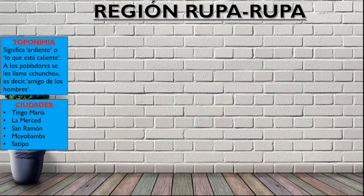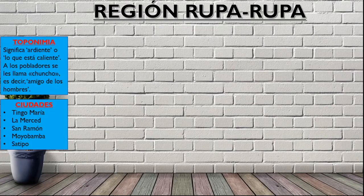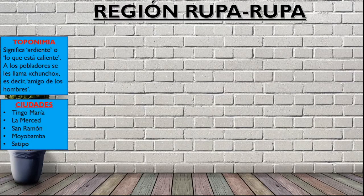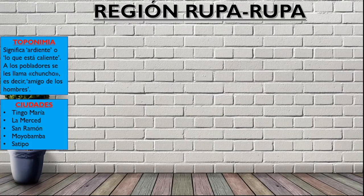Otro aspecto bastante importante son las ciudades que habitan en la Rupa Rupa, como por ejemplo Tingo María, la ciudad de La Merced, la ciudad de San Ramón, la ciudad de Mollabamba y las ciudades a tipo. Estas ciudades corresponden a la selva central. Incluso muchos viajes de promoción cuando están en quinto de secundaria viajan a esta zona — Tingo María, La Merced, Mollabamba — que corresponde a la Rupa Rupa o Selva Alta.